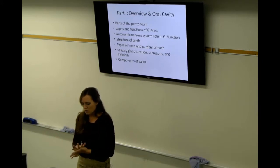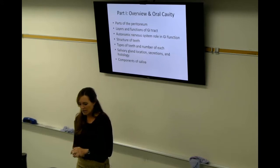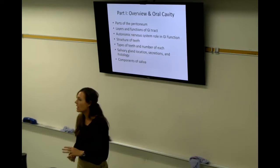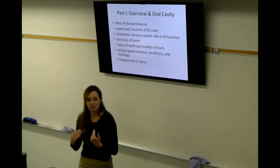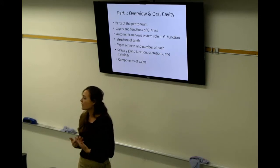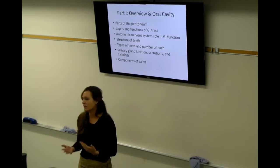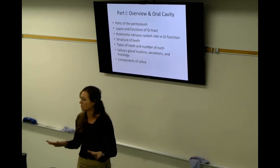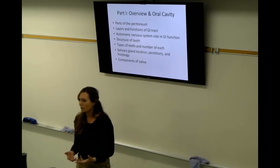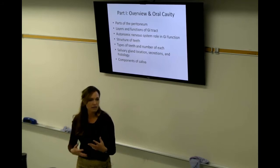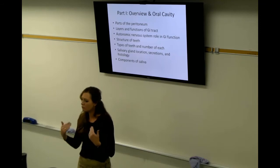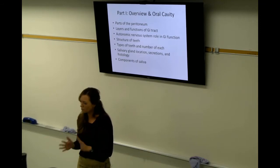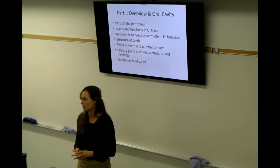The autonomic nervous system role in GI function, I want you to realize that GI function is primarily going to be parasympathetic. It's not evenly balanced. The sympathetic nervous system really doesn't do much outside of just shut it down when you're scared or running. Divert flow elsewhere. Digestion can go on hold. Almost 70 to 90% of the action of digestion and moving food along is really a parasympathetic driven thing. Things aren't always going to be even.